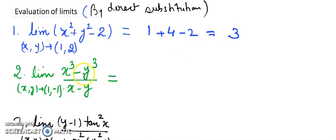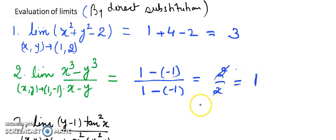In question number 2, the limit of (x³ - y³)/(x - y) at point (1,-1). When you put x equals 1, I get 1³. When I put y equals -1, I get -1³, that is -1. And here also x is 1 and y is -1. So I am getting 2/2 which equals 1. So the limit is 1 here.